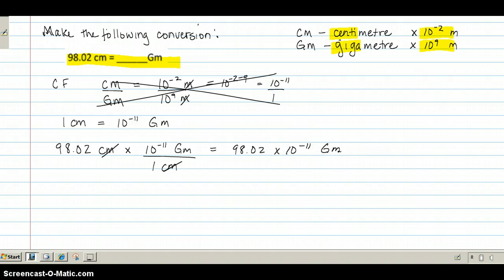If you wanted to write that in scientific notation, you could make that 9.802 times 10 to the minus 10 gigameters, because you're moving the decimal place one place to the left, or positive 1.